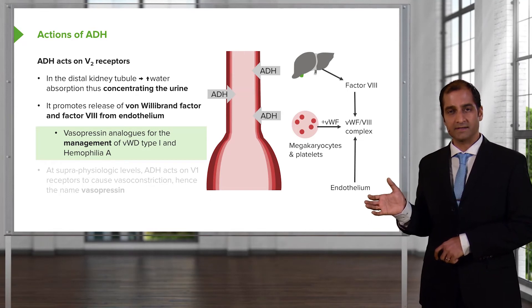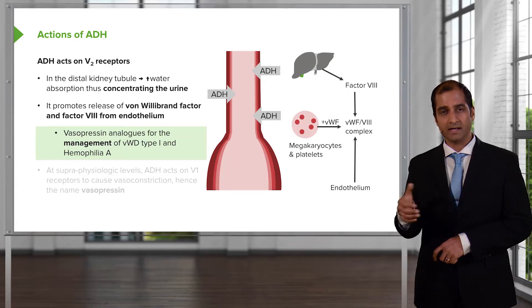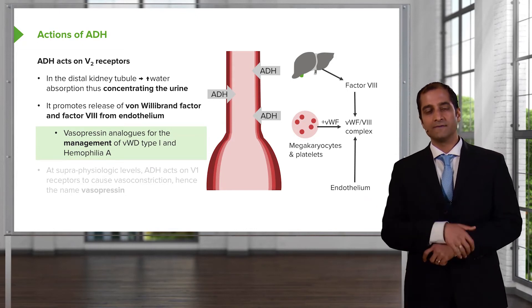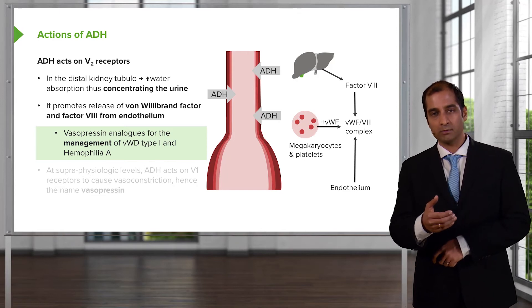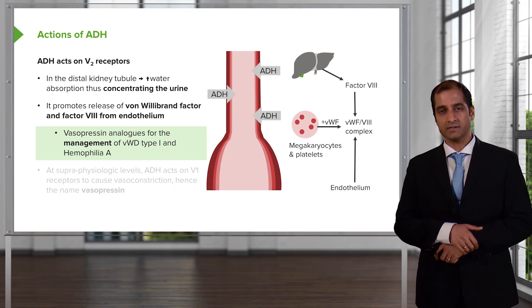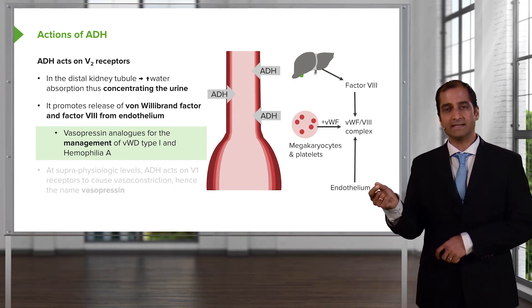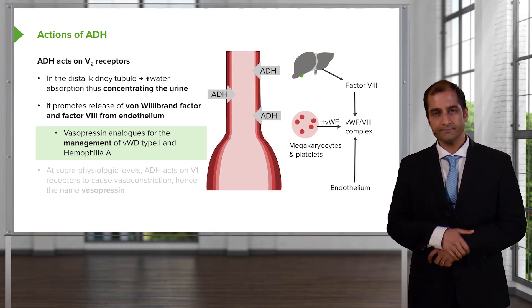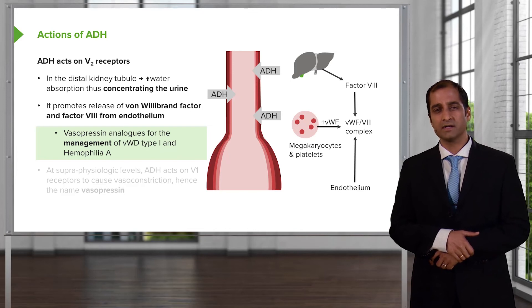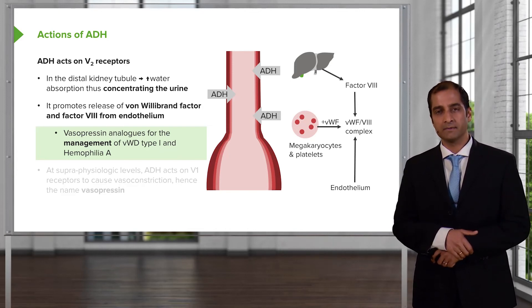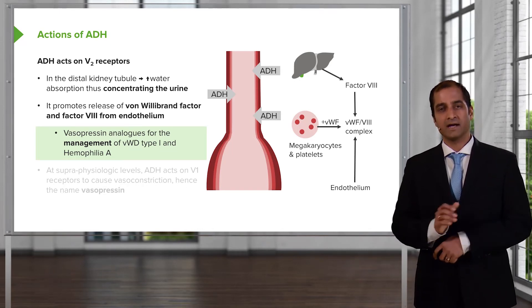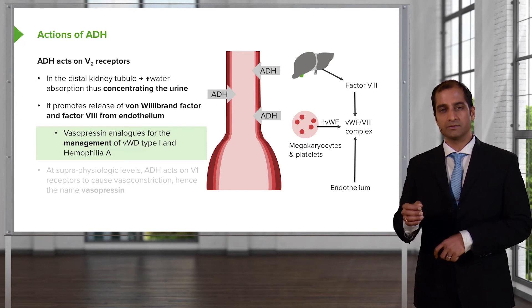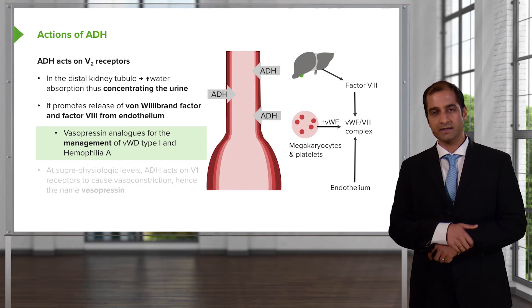Vasopressin analogues can be used for the management of von Willebrand type I and hemophilia. In von Willebrand disease type I, the patient is deficient in von Willebrand factor, which leads to massive menorrhagia, increased bleeding time, and increased PTT — because von Willebrand factor is needed for optimum functioning of Factor VIII. A vasopressin analog can therefore be used in this condition. In hemophilia A, there is a strict deficiency of Factor VIII, causing an isolated increase in PTT. Vasopressin can also be used to manage hemophilia A by stimulating release of Factor VIII.